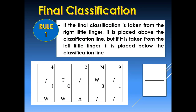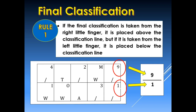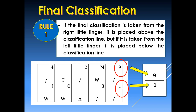The first rule in final classification is that if the final classification is taken from the right little finger or block 5, it is placed above the classification line or on the numerator. But if it is taken from the left little finger, it will be placed below the classification line or the denominator. However, only one number will be placed in the final classification.